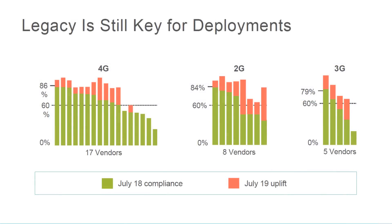It is important to emphasize that 2G and 3G networks are not going away anytime soon. Some countries are switching off 2G and some are switching off 3G, but the majority of the world will still have a combination of 2G, 3G, 4G and even 5G networks. As this slide emphasizes, legacy is still the key for deployments. The GSMA Mobile Economy Report in 2018 mentioned that 4% of the global population will still use 2G in 2025 — which amounts to 360 million users.